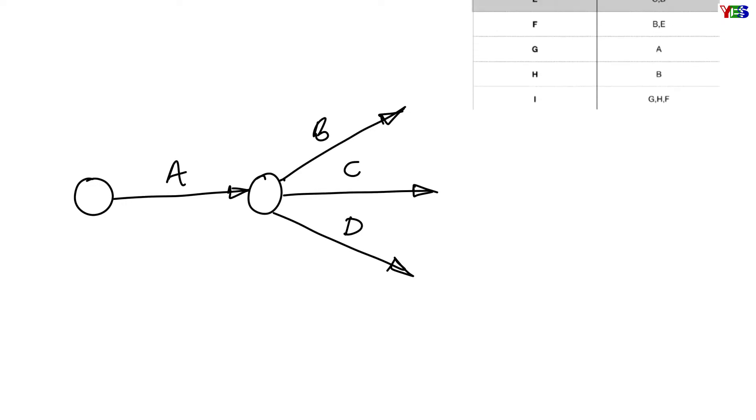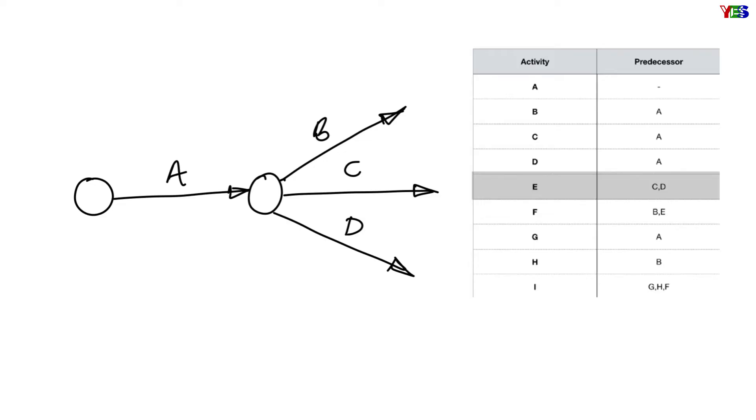In the next row we have C and D as predecessors of activity E. That means after completion of C and D simultaneously, activity E will start. That means C and D should have same head event, but it's not possible as per the rule because they're already having same tail event. So we need dummy activity here.